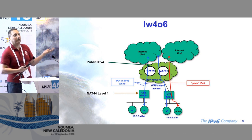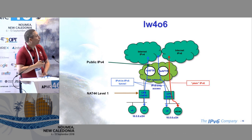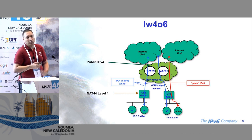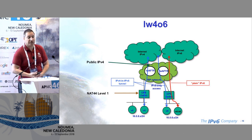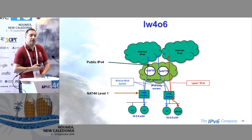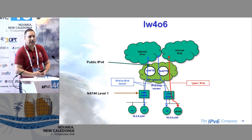Lightweight 4over6 only came to market in terms of CPE support about three years ago, while DS-Lite has been around for seven or eight years, so there is not much deployment yet. But some big networks are using it — for example, Greece, which has significant IPv6 deployment in Europe, uses this one. If you need to choose between DS-Lite and lightweight 4over6, clearly I would say go to lightweight 4over6 because it's the same but you save money here.